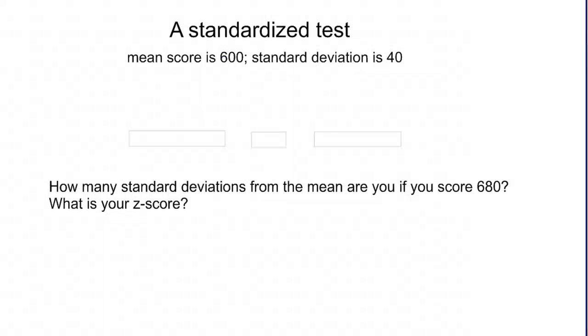Let's imagine you have a standardized test and the average score, the mean score is 600. The standard deviation is 40. Remember, the standard deviation is a measure of how far spread apart on average people's scores are.